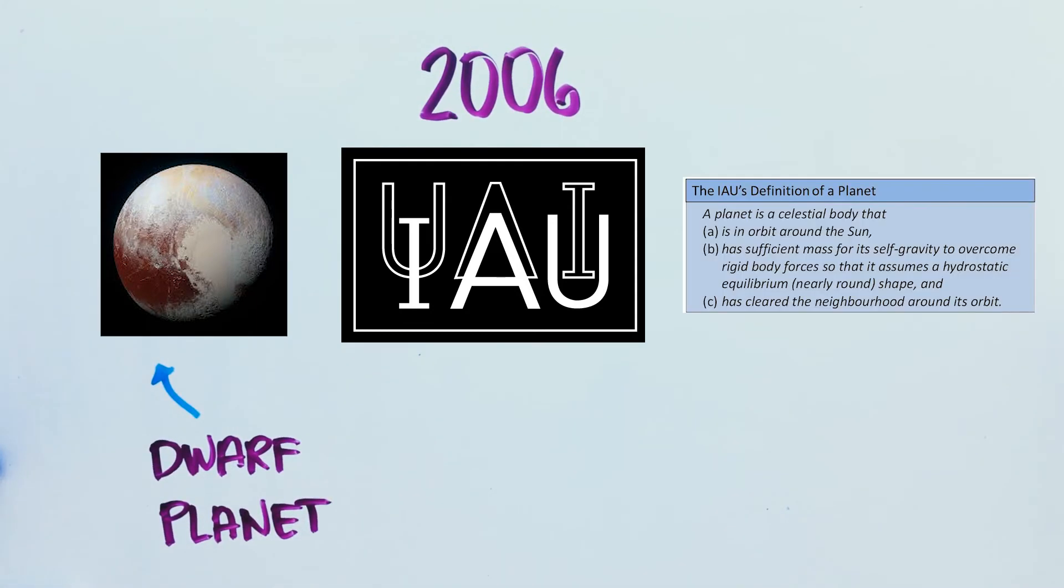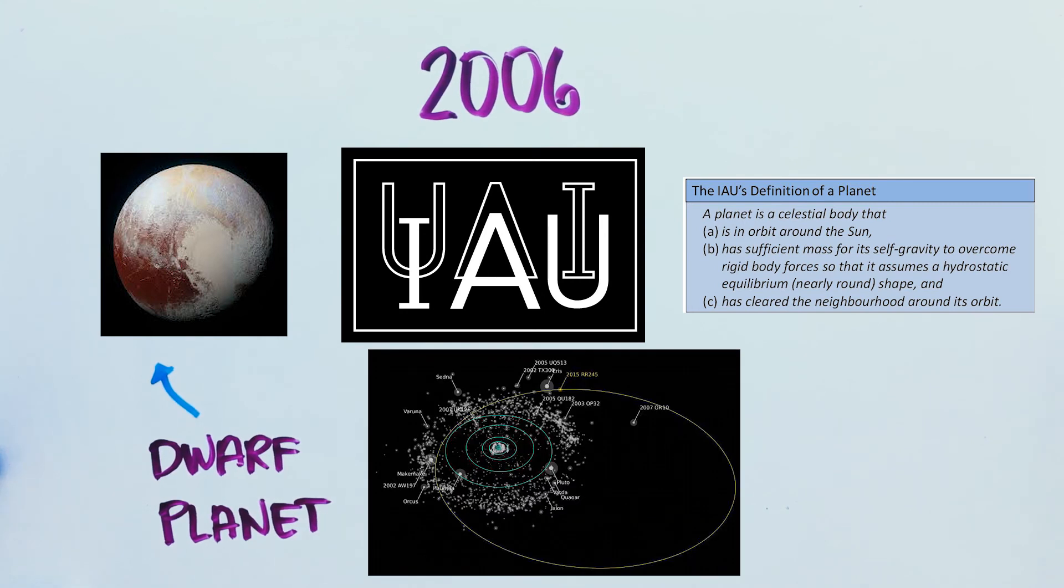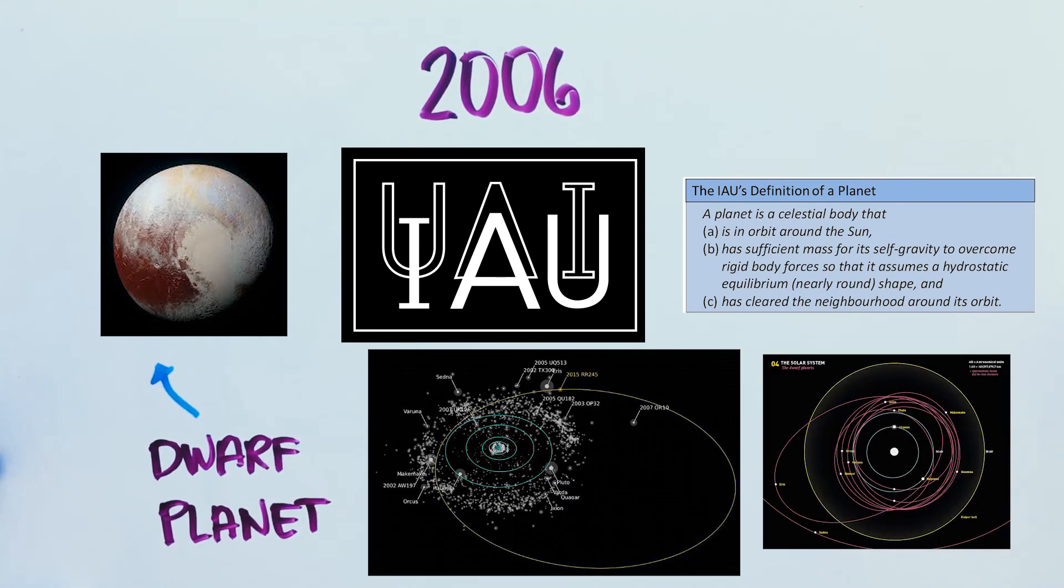In 2006, the International Astronomical Union, or IAU, reclassified Pluto as a dwarf planet. According to the IAU, a planet is a celestial body that is in orbit around the Sun, has sufficient mass for its self-gravity to overcome rigid body forces so that it assumes hydrostatic equilibrium, or nearly round shape, and has cleared the neighborhood around its orbit. Pluto met only the first two of these criteria. Clearing the neighborhood means that the planet has either vacuumed up or ejected large objects in the vicinity of the space or achieved gravitational dominance. Pluto shares its orbital neighborhood with other Kuiper Belt objects, so it was reclassified as a dwarf planet.